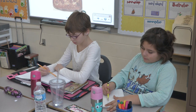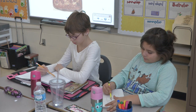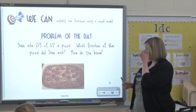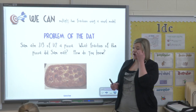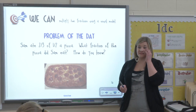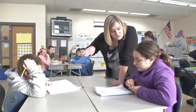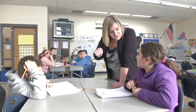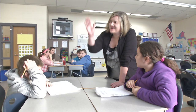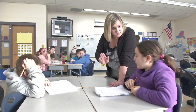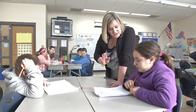You can draw pictures, use models. Sam ate two-thirds of half a pizza. What fraction of the pizza did Sam eat? Use rows first to represent the first fraction. The next time, make sure we shade columns to represent the second fraction, okay?